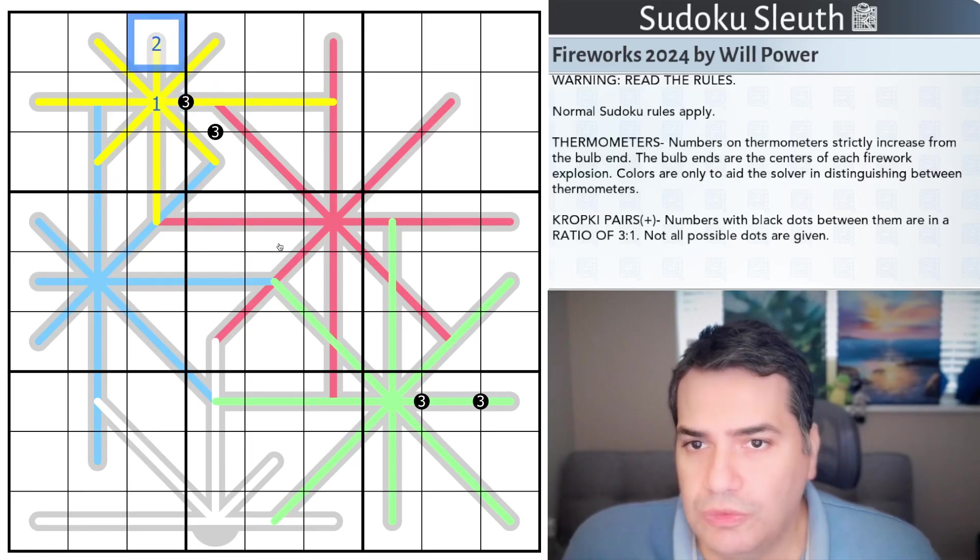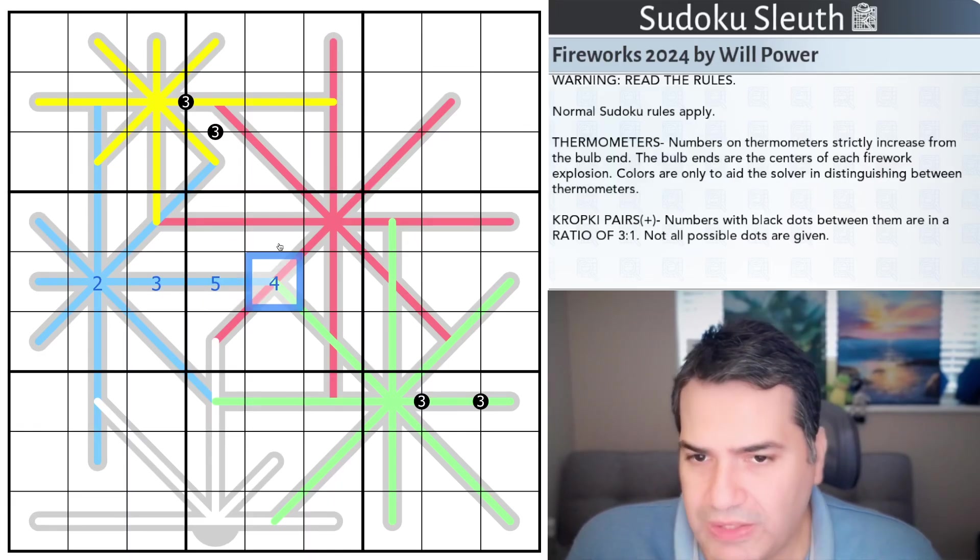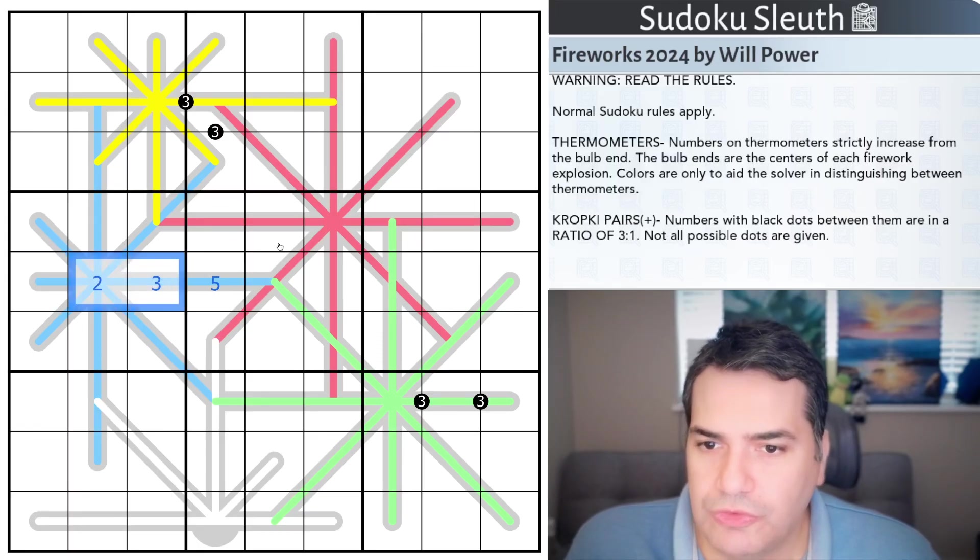So one, two would work. Two, one would not because I'm no longer strictly increasing. And obviously I could do, let me pick this one instead, two, three, five. But I can't go back down to four. And I don't have to have consistent steps as you can see. Difference of two, difference of one. That's thermometers.